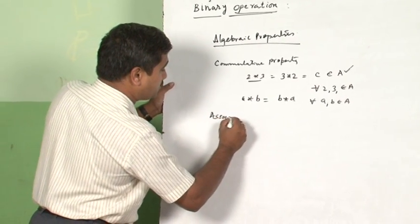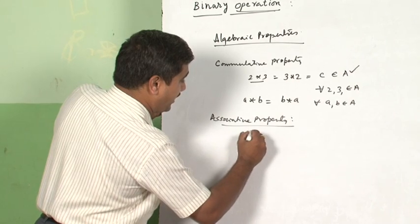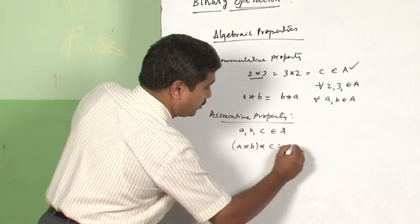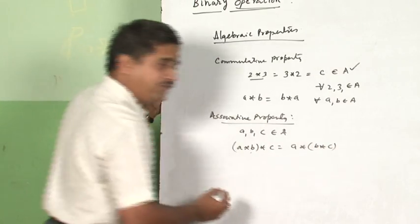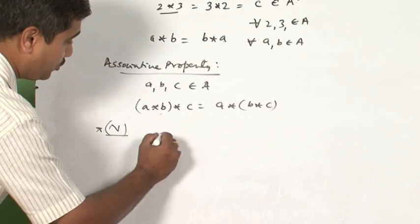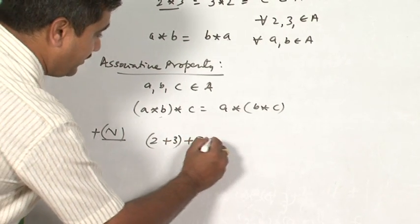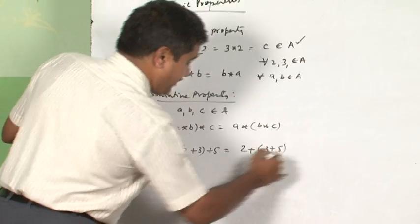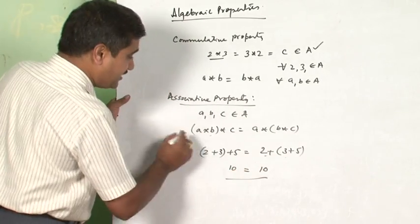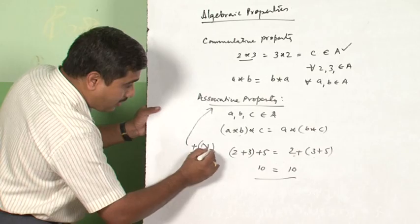The next property is the associative property. Associative property: take A, B, C belonging to capital A such that A★(B★C) is equal to (A★B)★C. For instance, if star is addition on the set of natural numbers N, then 2+(3+5) equals (2+3)+5, which gives 2+8=10 and 5+5=10. This means plus is associative on the set of natural numbers.